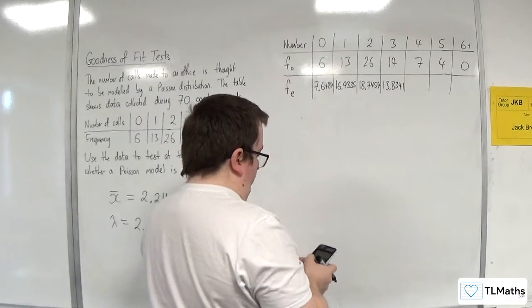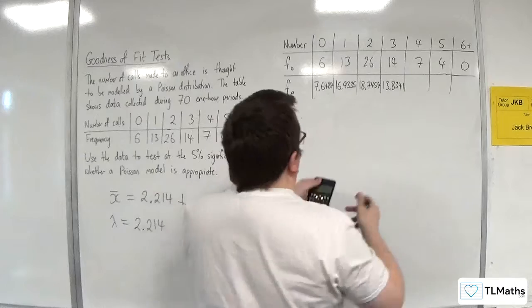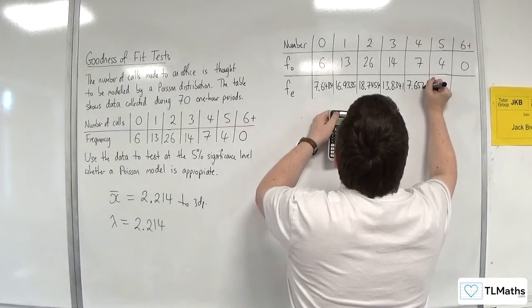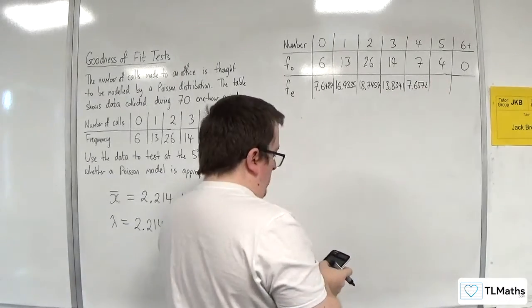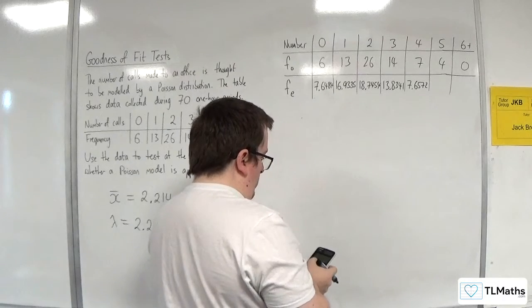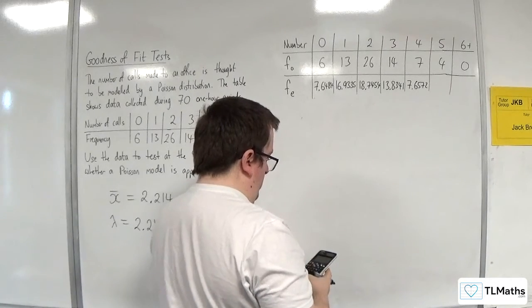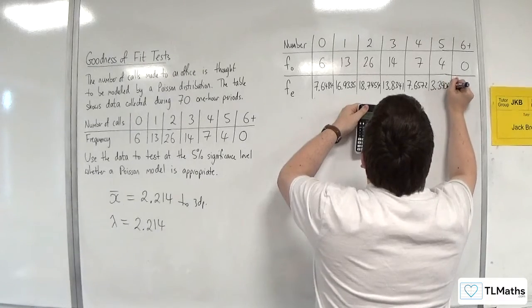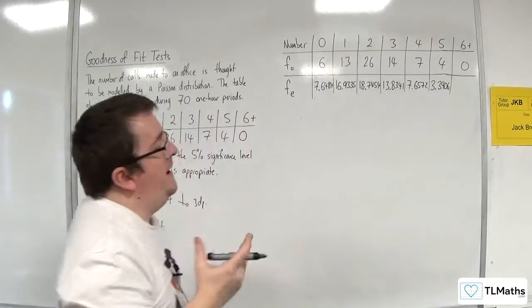Let's change it to 4: 7.6572. Let's change it to 5: 3.3906.